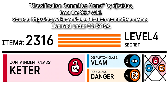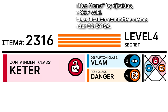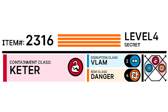Now the old system, for a lot of the older SCPs that have come out, they usually have the item number, and then the containment class, and then the special containment procedures. The new classification system still has the item number and the containment class, but it also has a clearance level, disruption class, and a risk class, of which I'll be going over.